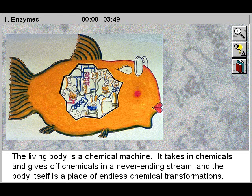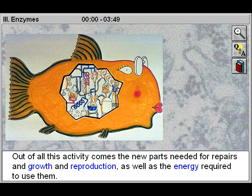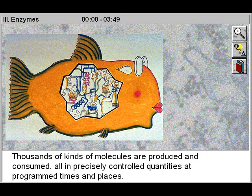The living body is a chemical machine. It takes in chemicals and gives off chemicals in a never-ending stream, and the body itself is a place of endless chemical transformations. Out of all this activity comes the new parts needed for repairs and growth and reproduction, as well as the energy required to use them. Thousands of kinds of molecules are produced and consumed, all in precisely controlled quantities at programmed times and places.